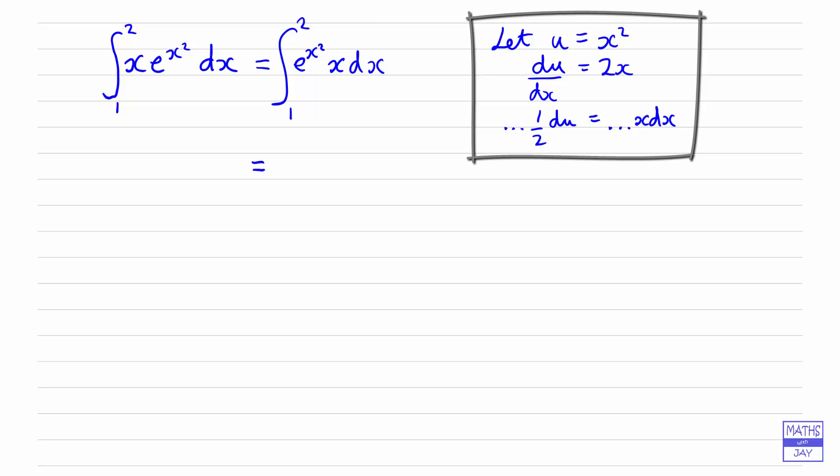So that will give us, well the half can come outside, we'll leave the limits at the moment, we're going to have e to the power of x squared which is u, and the x dx well we've already got the half so then we write down the du. So we've replaced the x dx by a half du.